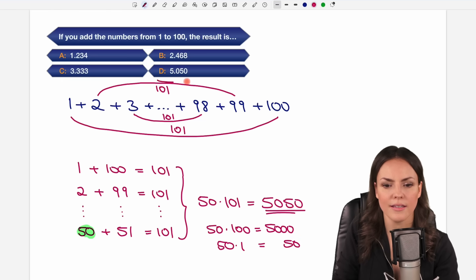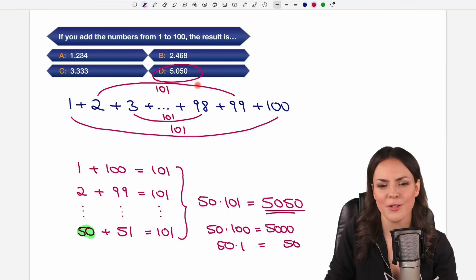And this is answer D. So Gauss was pretty fast in solving this in elementary school by the way. But it was not enough for him to just add the numbers from 1 to 100.